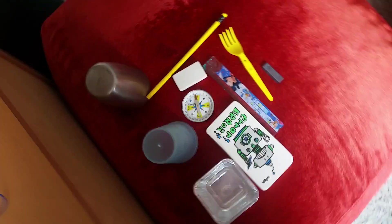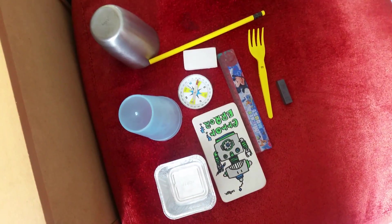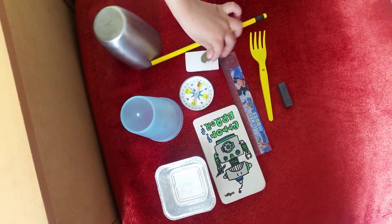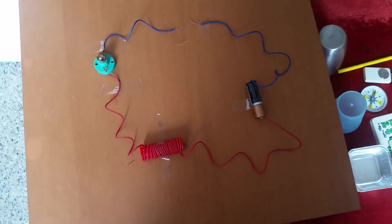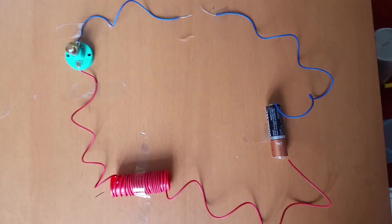We have taken a few things like eraser, ruler, coin, pencil, glass, etc. and we are going to classify them as conductors and insulators using this circuit.